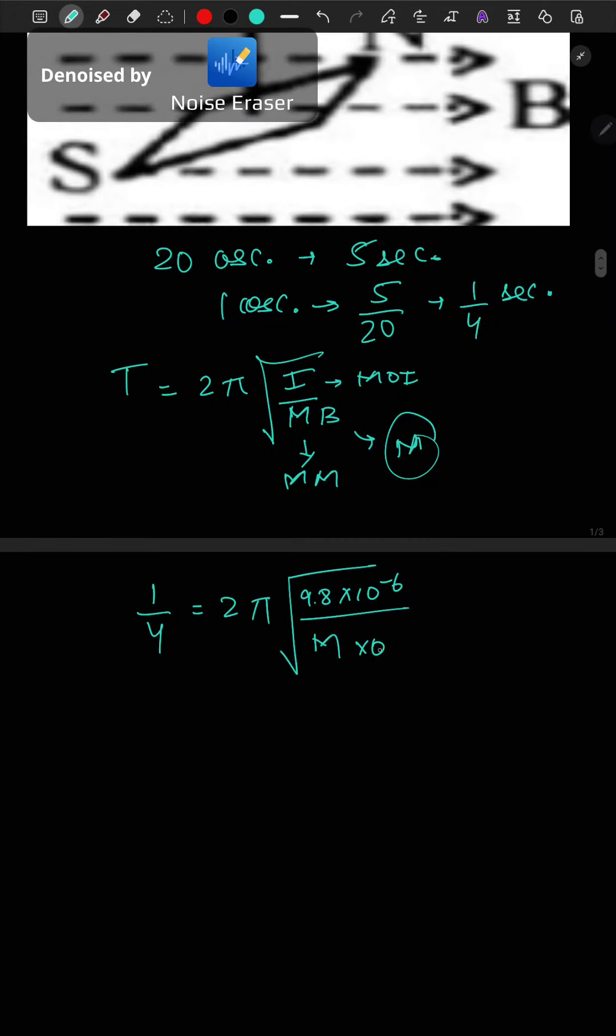Squaring on both sides, 1 by 16 equals 4π² into 9.8 into 10 to the power minus 6 divided by M into 0.049.